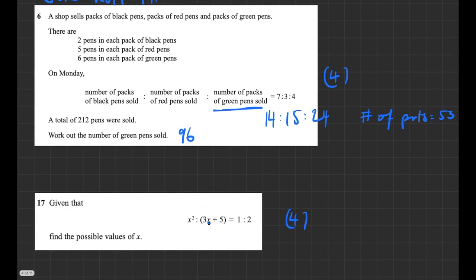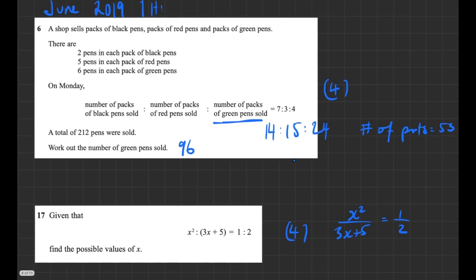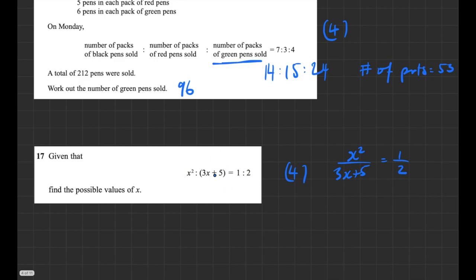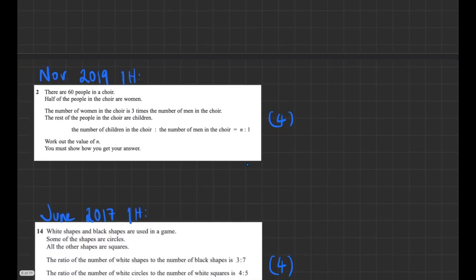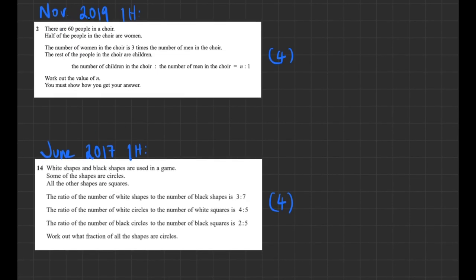Question 17, also from June 2019: it starts as a ratio question but you need to know you can write ratios as fractions. I would suggest writing this ratio as x² / (3x + 5) = 1/2, and then it becomes an algebraic fractions problem. It's not purely a ratios question, but it has that aspect — you need to understand ratios can always be written as fractions. Check the exam walkthroughs for the full solution.